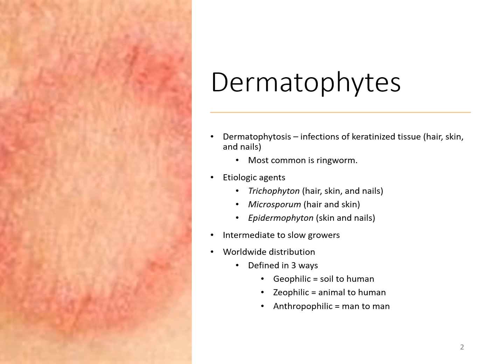You may be familiar with ringworm. They are all intermediate to slow growers with a worldwide distribution and they can be transmitted to the host via soil or animal or man-to-man.